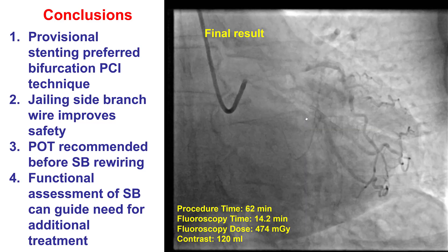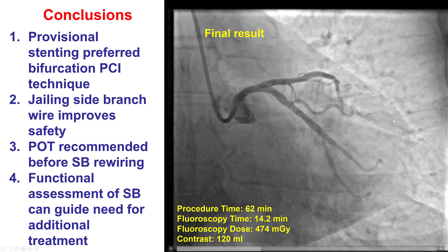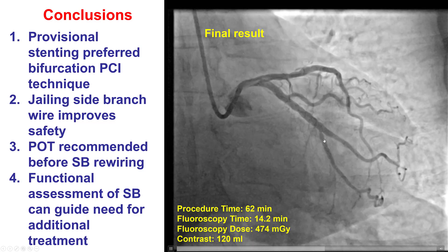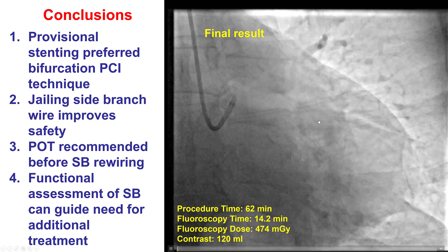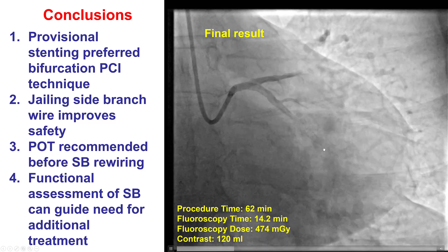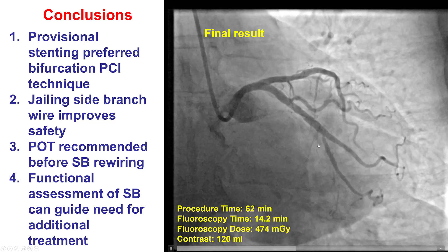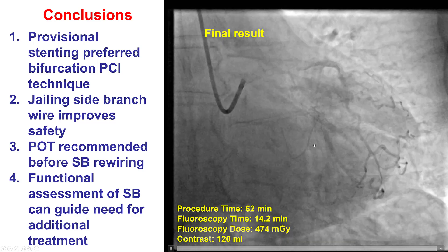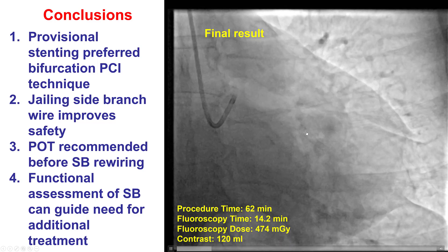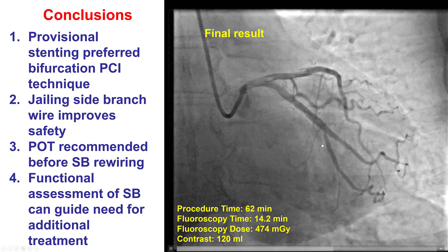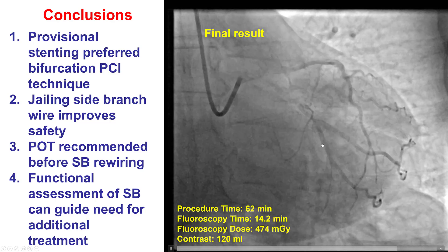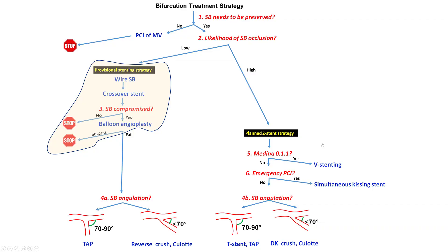This is the best-case scenario: we place a stent in the main vessel, we do POT, there is no compromise of the branch, and the case is done. There is no need to rewire the branch and no need for balloon inflation in the branch. However, this is not always the case.